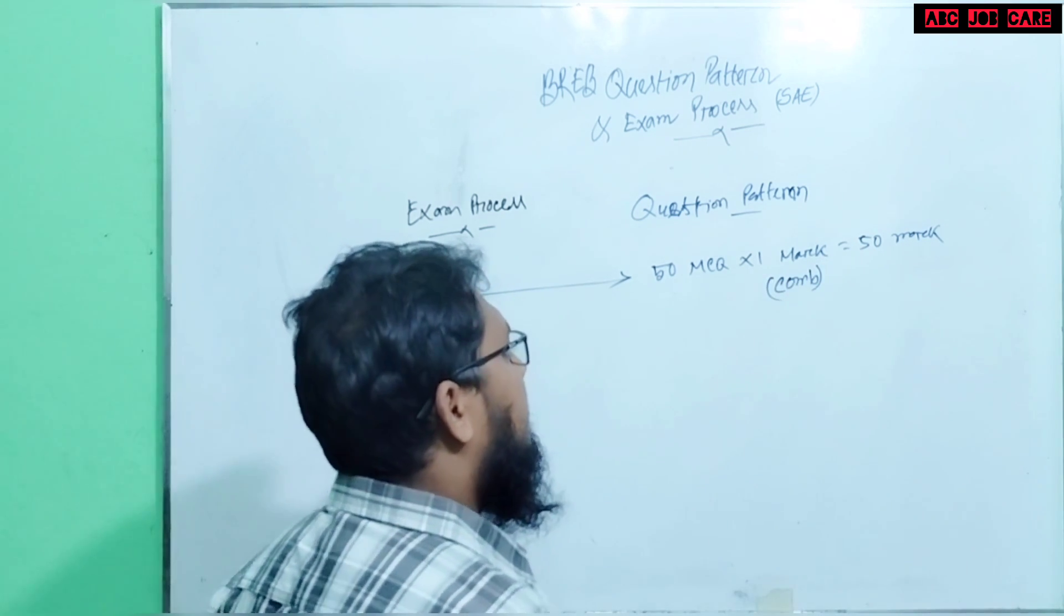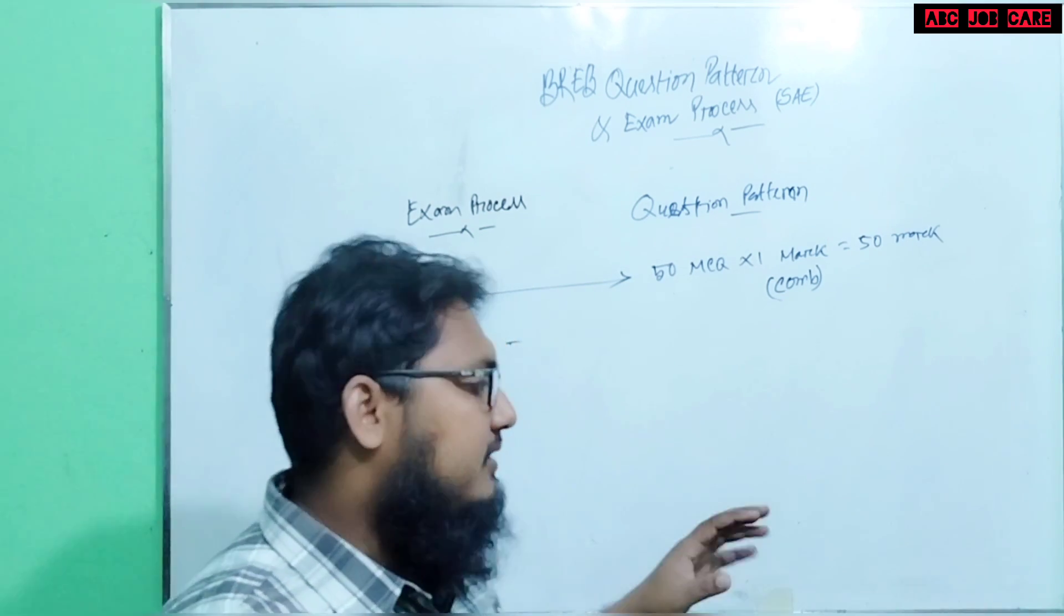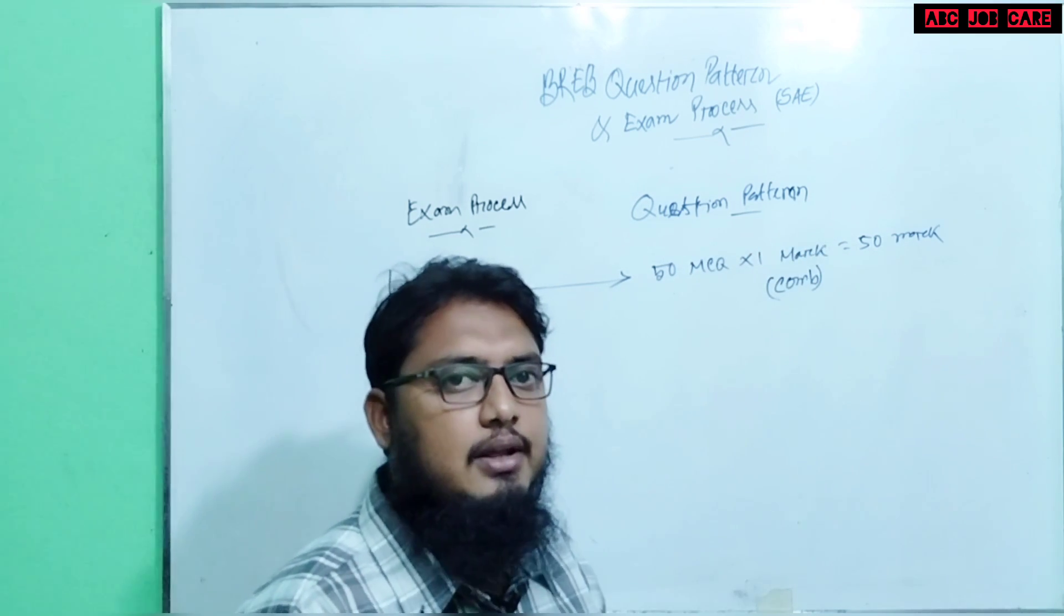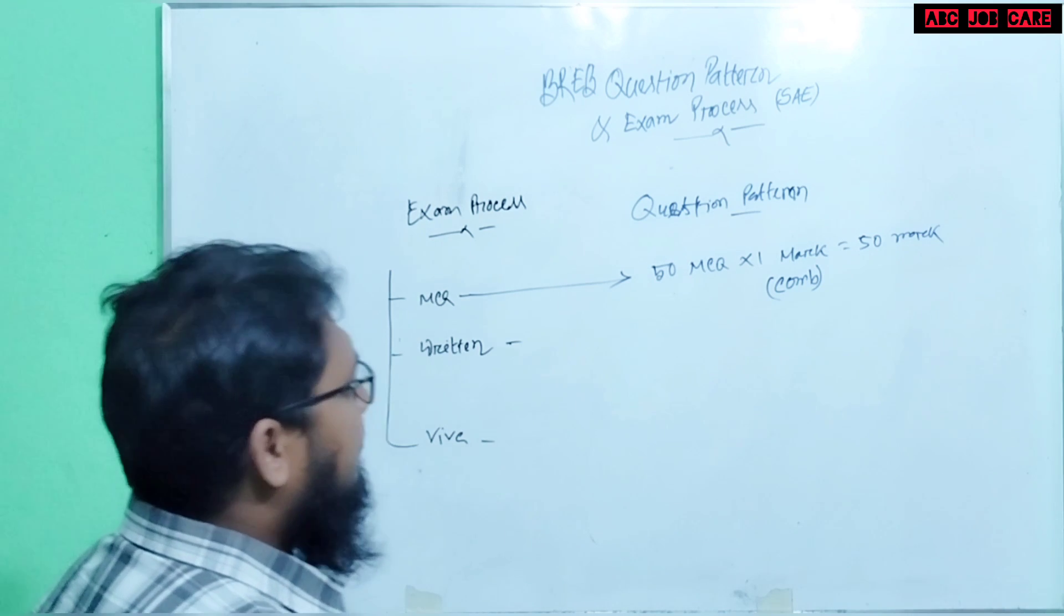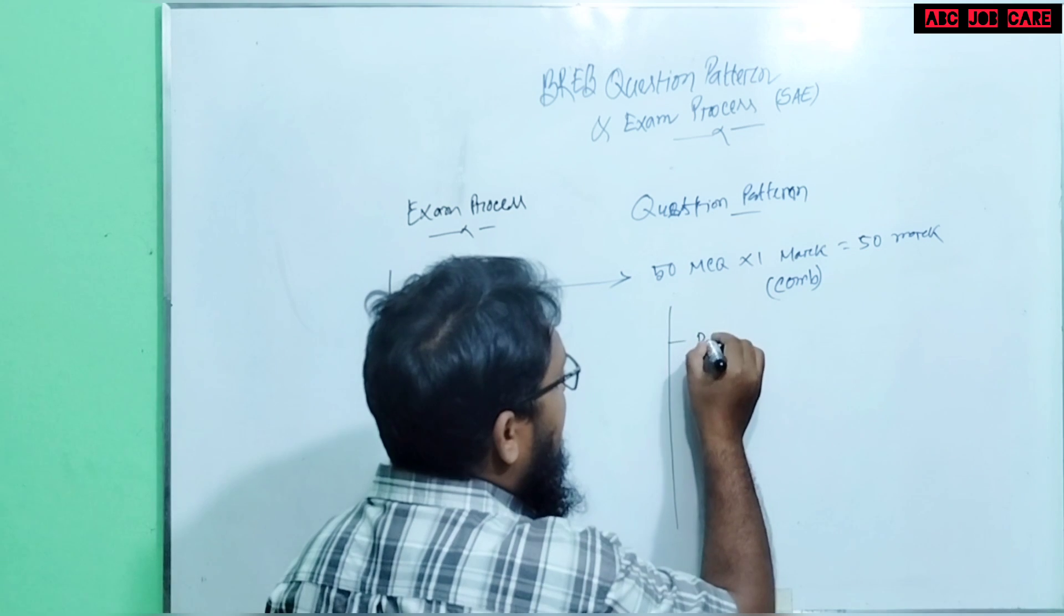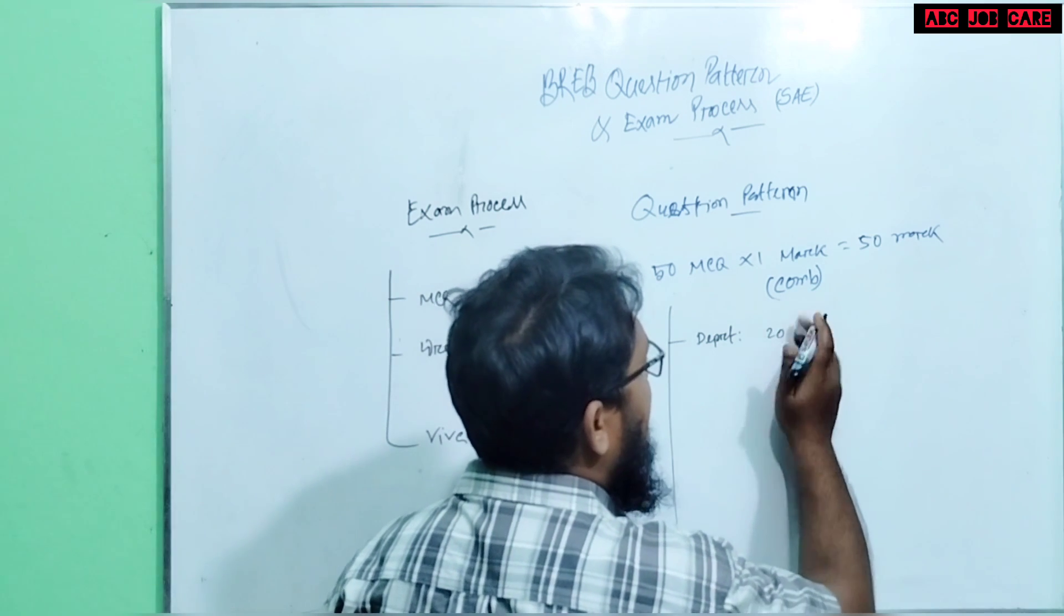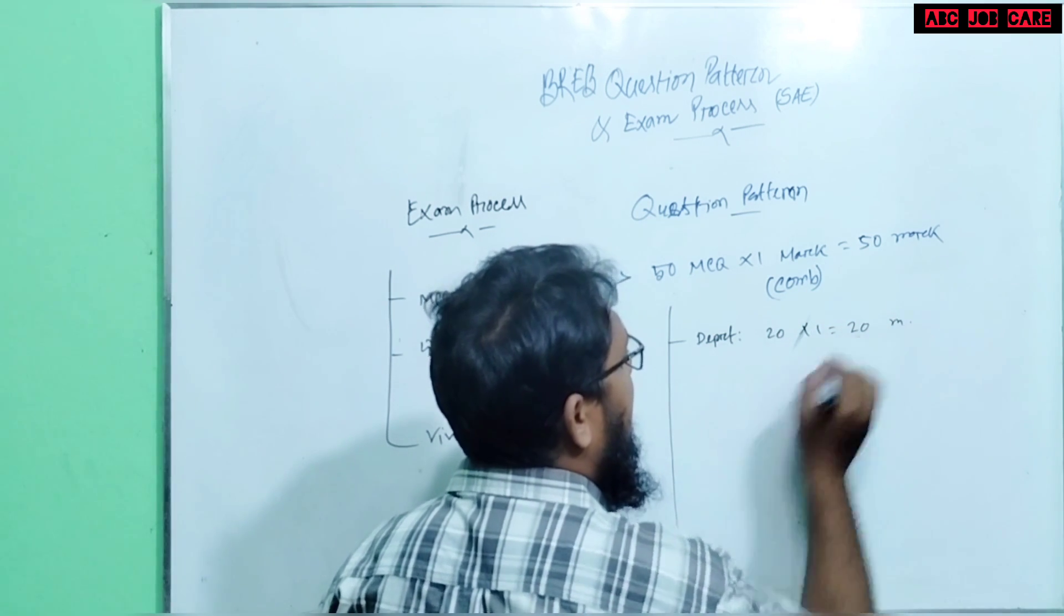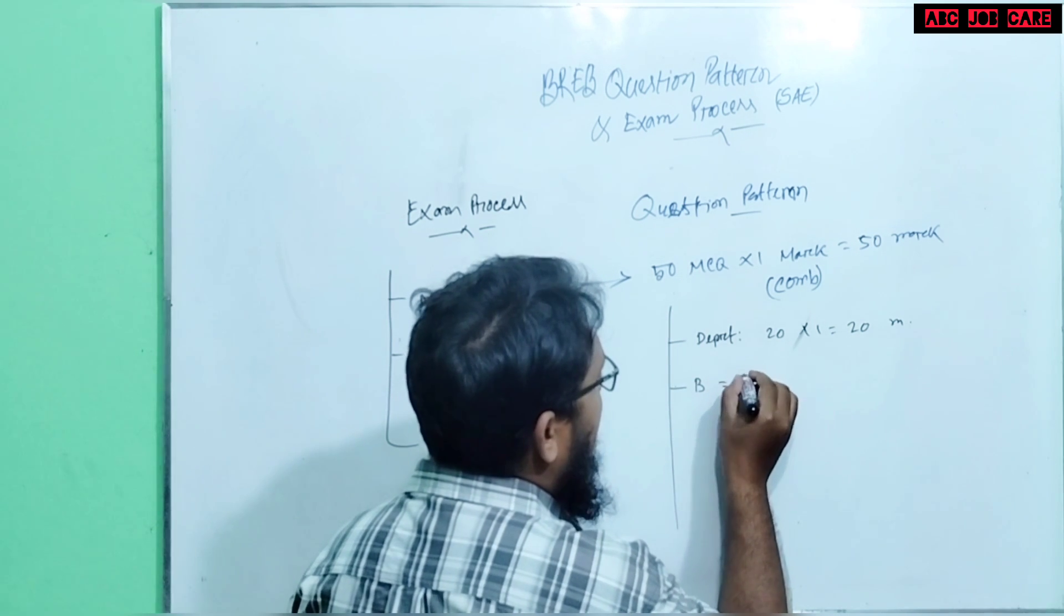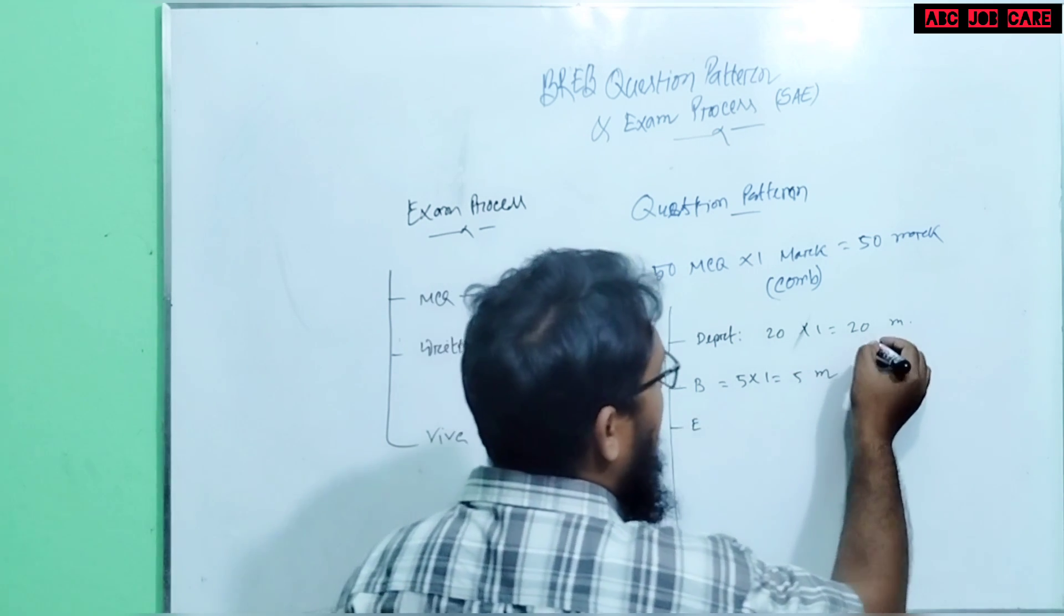Combined portion is civil, mechanical, and electrical computer. This is the top market that has been combined portion of the range. The range is also combined portion. Past mark English is a department. English is MCQ.